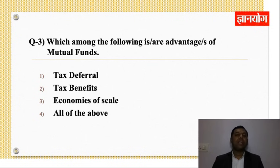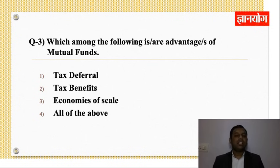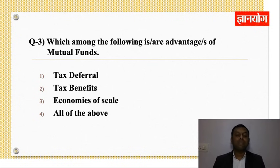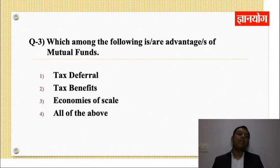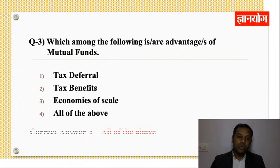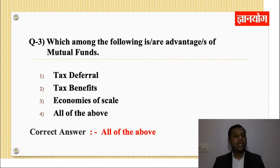Economies of scale का मतलब है: mutual fund जब share खरीदेगा तो बड़ा order देगा — कुछ schemes का AUM 39,000 करोड़ है। Wholesale में चीजें comparatively सस्ती पड़ती हैं, transaction cost कम होता है। सबका पैसा एकत्र होता है और fund manager को wholesale का benefit मिलता है — इसलिए यह भी mutual fund का advantage है। Answer: All of the above।